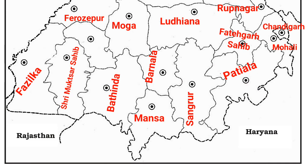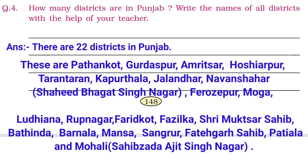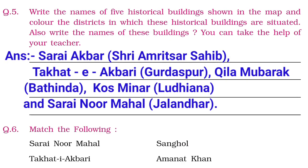The remaining districts are: Ferozpur, Moga, Ludhiana, Rupnagar, Chandigarh, Mohali, Fatehgarh Sahib, Barnala, Faridkot, Muktsar, Fazilka, Bathinda, Mansa, Sangroor, Patiala. There are 22 districts in Punjab, and we have written the names on the map.